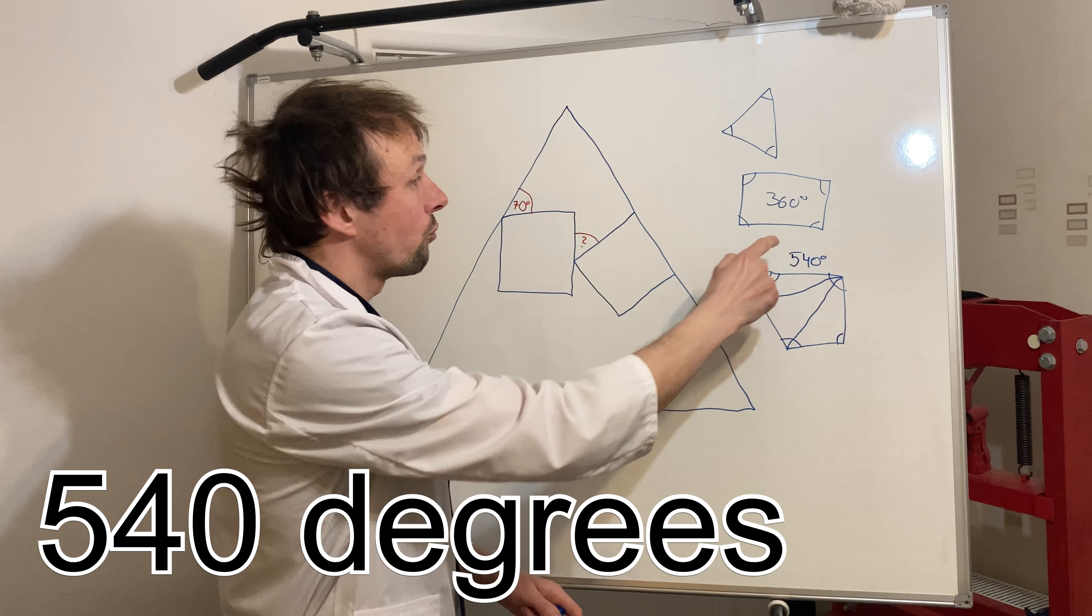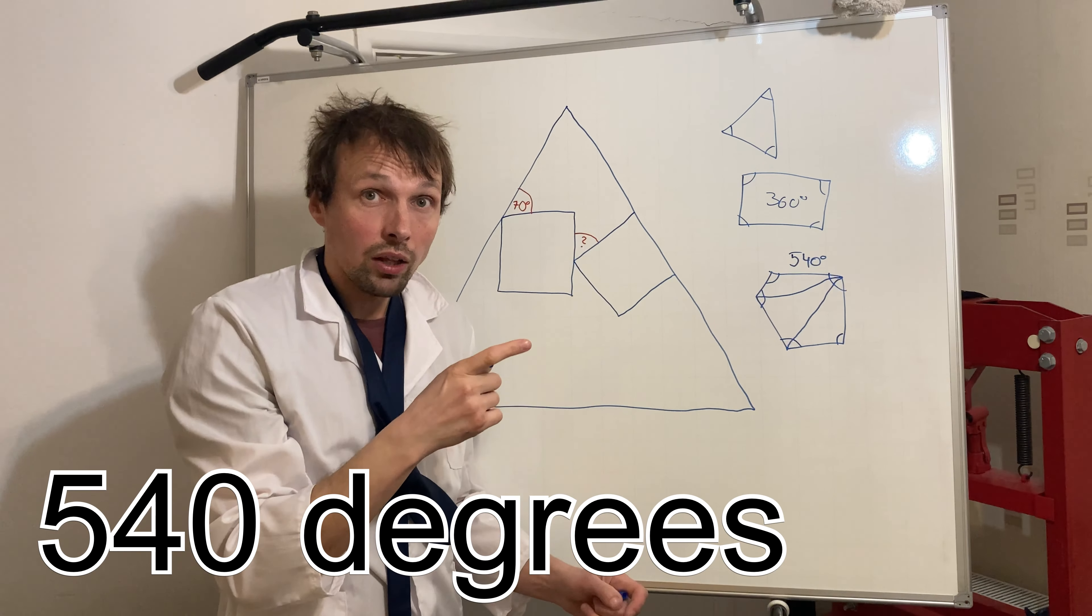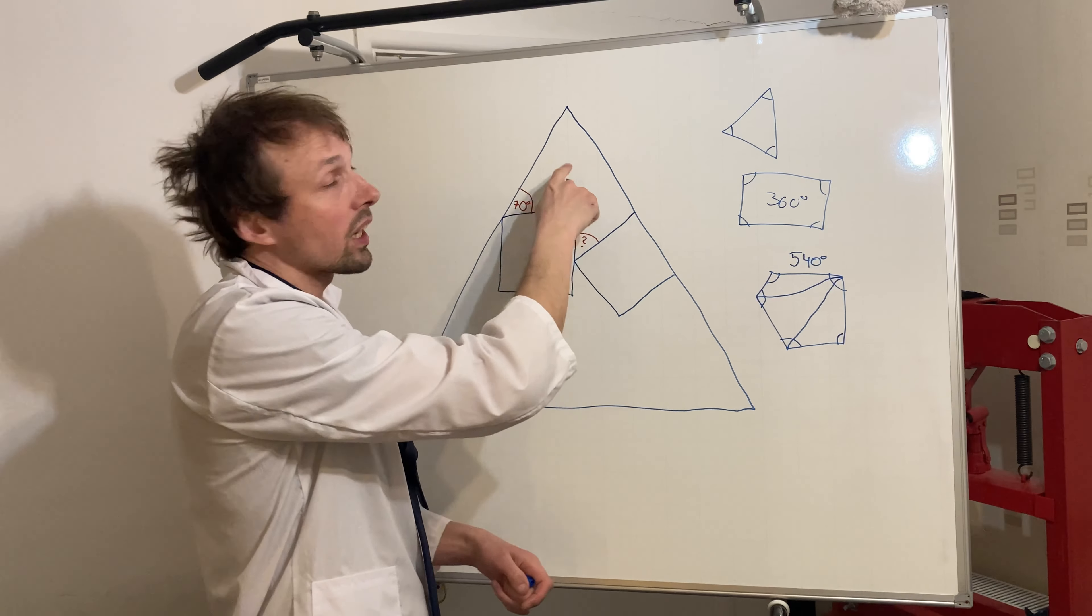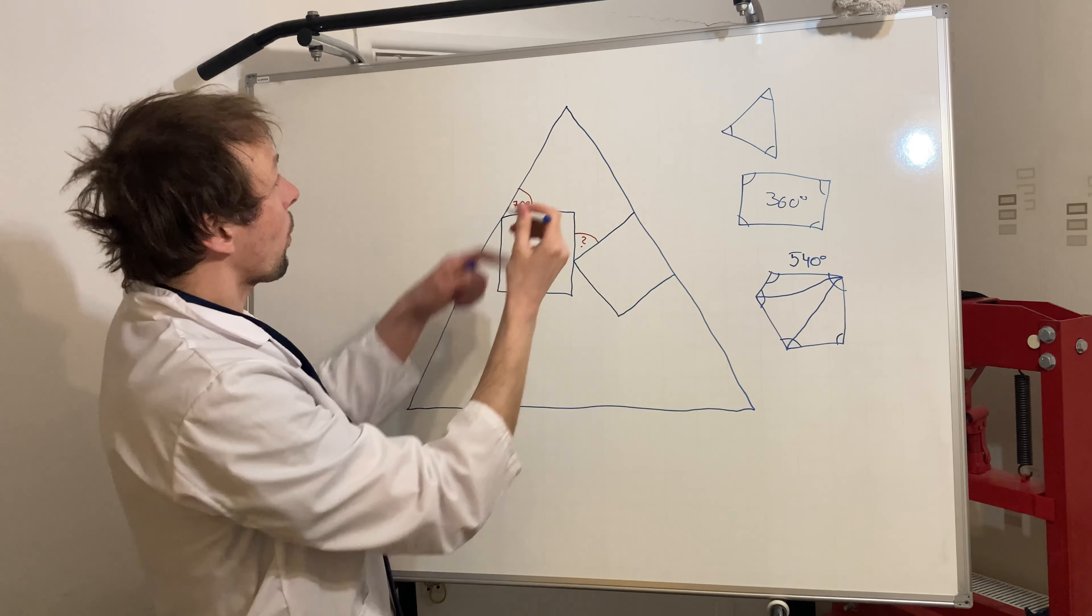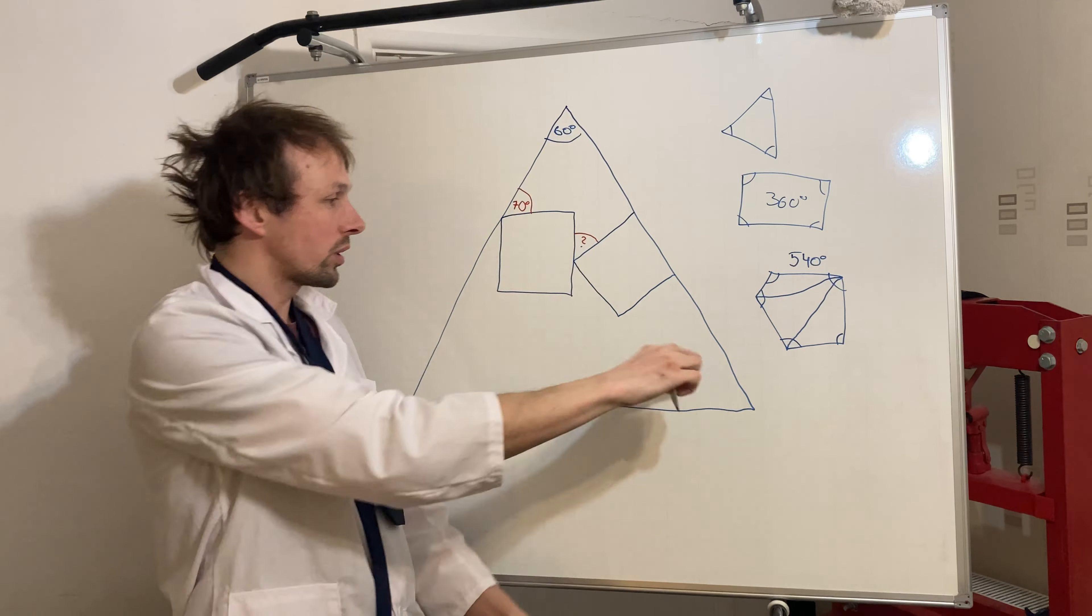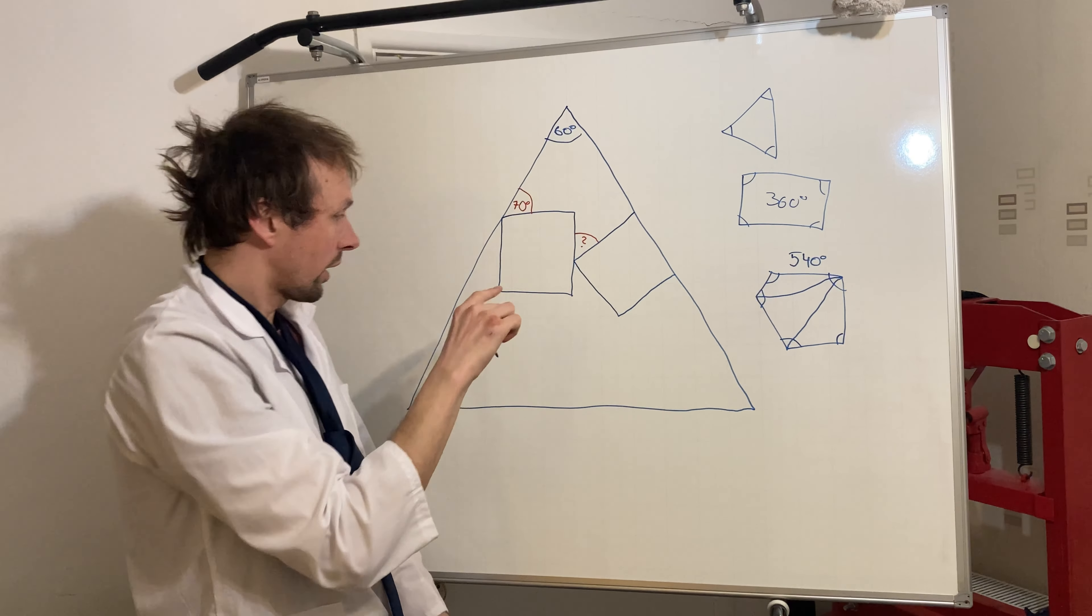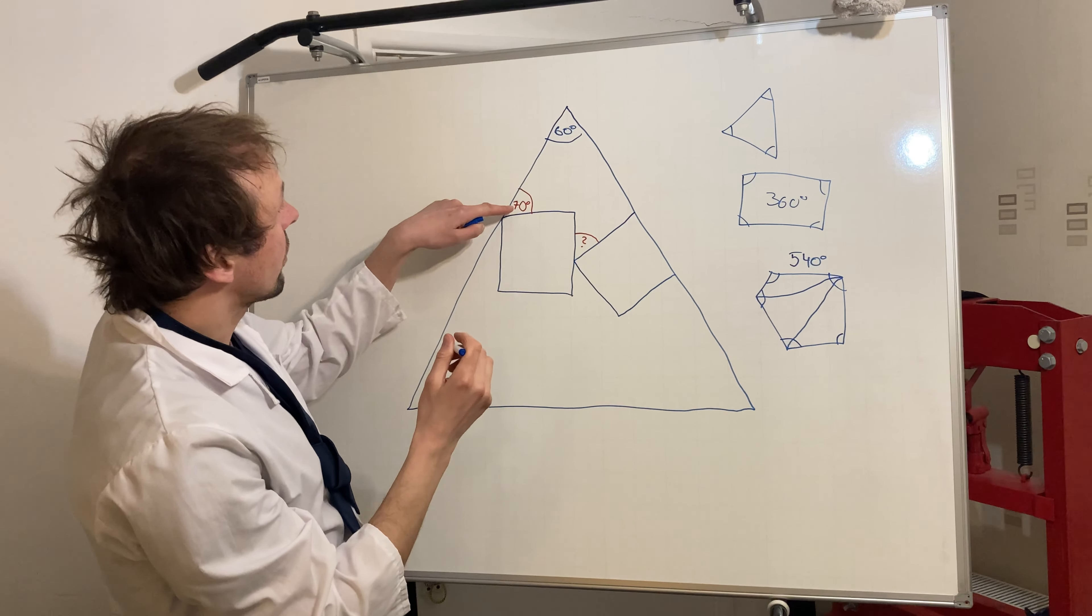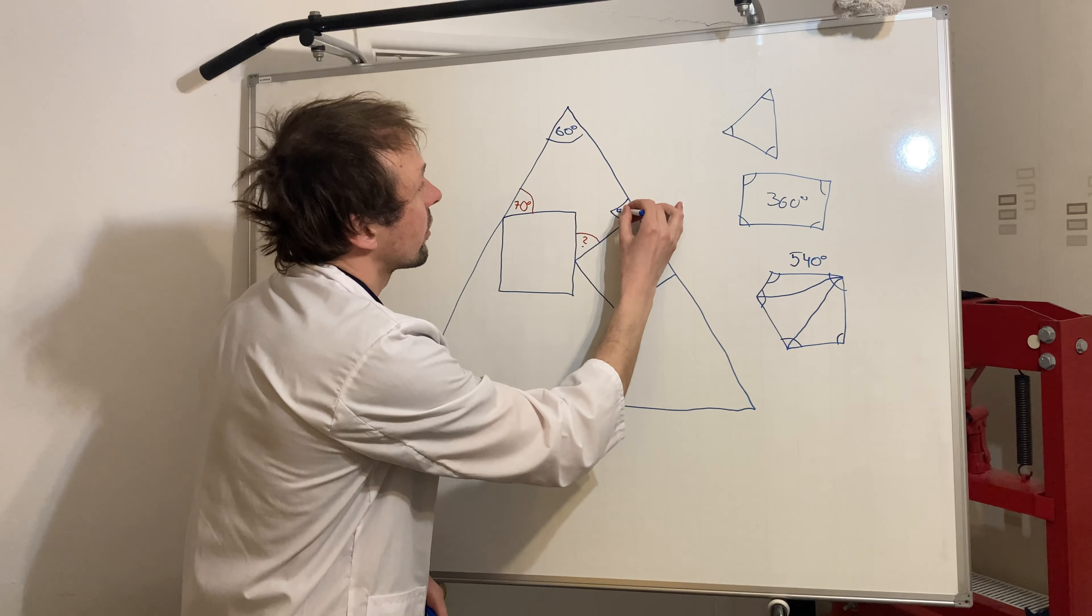So this is all we needed to know, 540 degrees, and the same 540 degrees is also inside this pentagon. So now because we know this angle is 60 degrees, you know the equilateral triangle, so that's already given. 70, so this is gonna be 90 degrees.